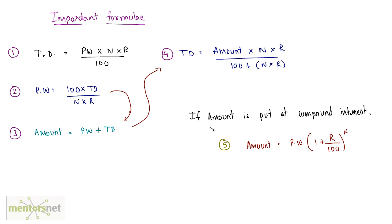If the problem says the amount is put at compound interest, then the true discount is basically the compound interest on the principal amount — not simple interest. In that case we use the compound interest formula: Amount = Principal × (1 + R/100)^N. Keep these formulas in mind — they are very important.